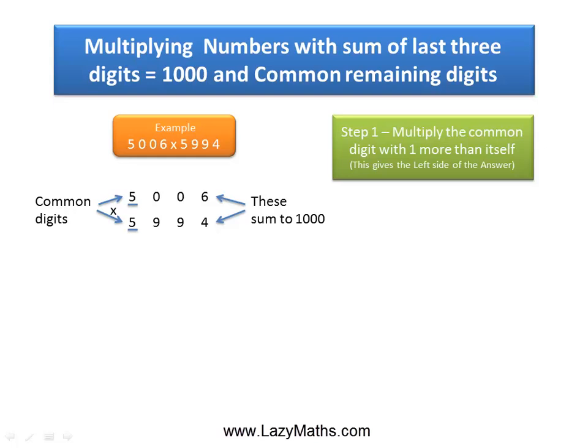The first step is to multiply the common set of digits with 1 more than itself to get the left hand side of the answer.